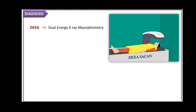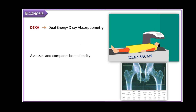To diagnose osteoporosis, we use the DEXA scan, or dual-energy X-ray absorptiometry, which uses low doses of X-rays to see how dense the bones are. The result is compared to the bone density of a healthy adult of the same age and ethnicity. The result is presented as a T-score; a T-score of less than or equal to negative 2.5 confirms the diagnosis of osteoporosis.